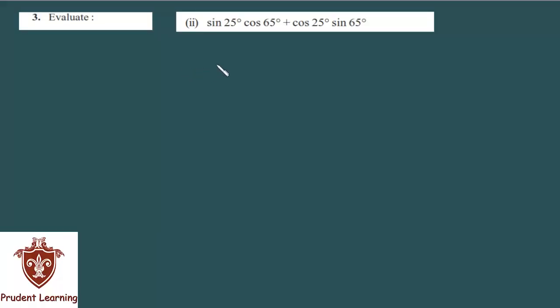Third question, second section. Here we evaluate sin 25 degree into cos 65 degree plus cos 25 degree into sin 65 degree.